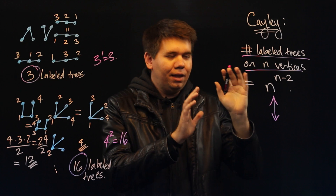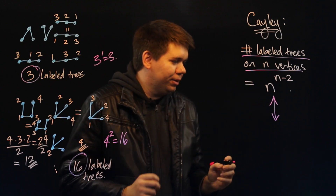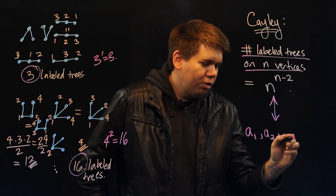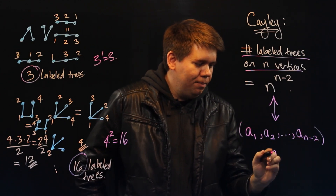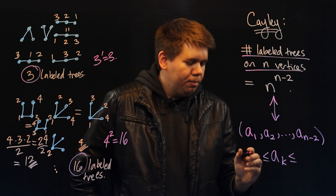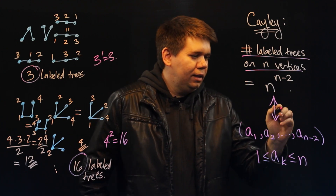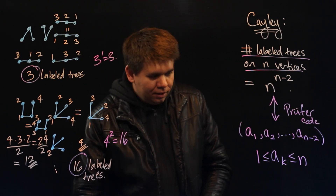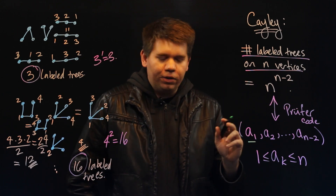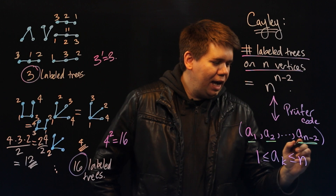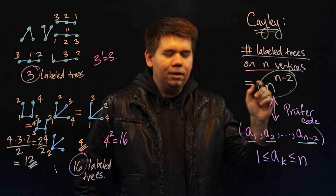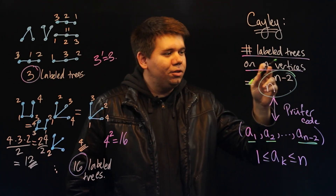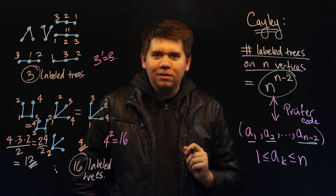Here, instead of counting labeled trees on n vertices, we'll create a correspondence between those trees and sequences of numbers — specifically, a sequence of n−2 numbers a1, a2, …, a(n−2), where each number is some value between 1 and n. This is called the Prüfer code for the tree. Clearly, there are n choices for each of the n−2 positions, giving n^(n−2) total sequences — meaning there must also be exactly n^(n−2) labeled trees on n vertices.